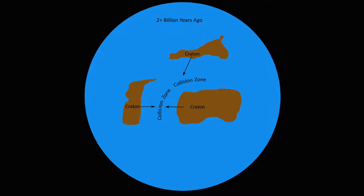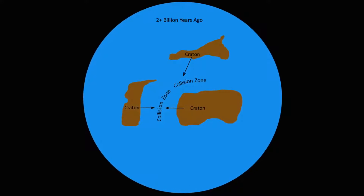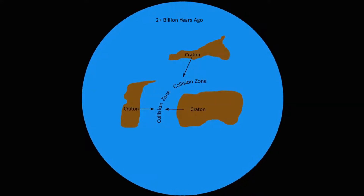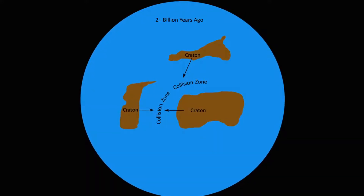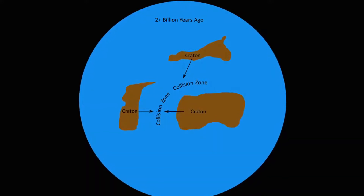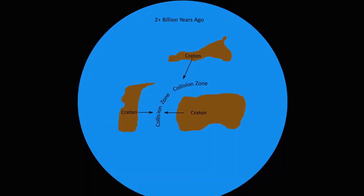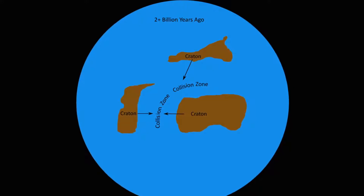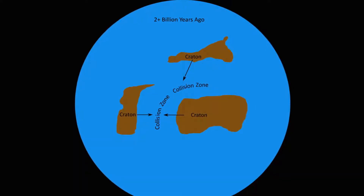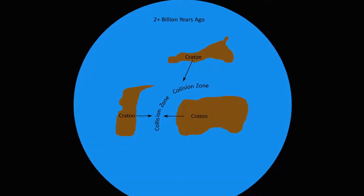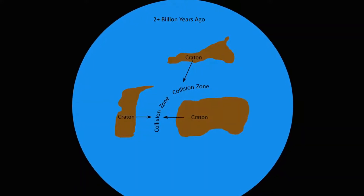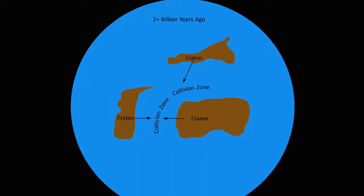The initial North American continent was forged by the collision of several large tectonic plates known as cratons. These cratons comprise some of the oldest known rocks from the Archaean age.